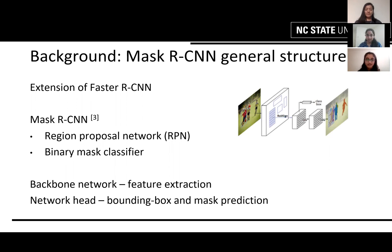For our project, we decided to use Mask RCNN compared to other techniques such as YOLO or SSD, because of the accuracy that Mask RCNN gives. Mask RCNN is basically an extension of Faster RCNN, and it's capable of predicting segmentation masks on regions of interest in a pixel-to-pixel manner. Mask RCNN can be divided into two parts.